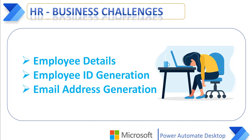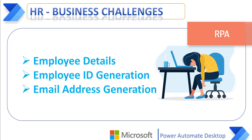The organization's HR team has to fill the employee details manually in an Excel sheet. A new employee identification number has to be generated by the IT or HR department. Email communication has to be coordinated between IT and HR for email generation for the employee. Once the employee ID and email are received, employee details have to be updated manually by HR in the Excel sheet.